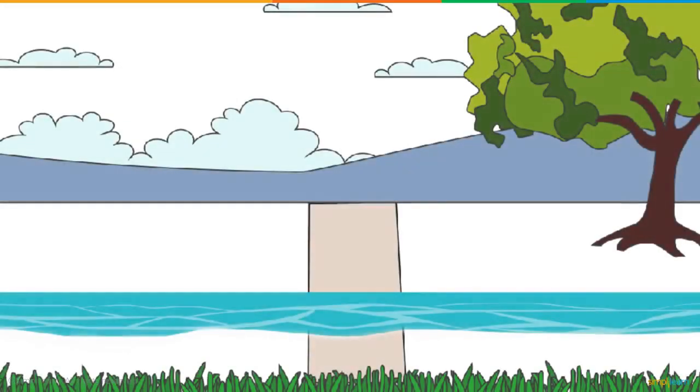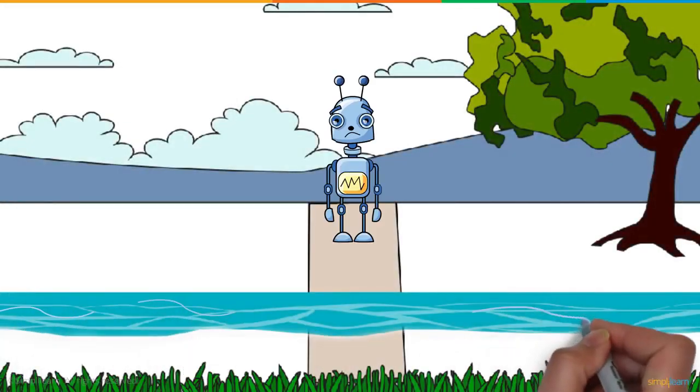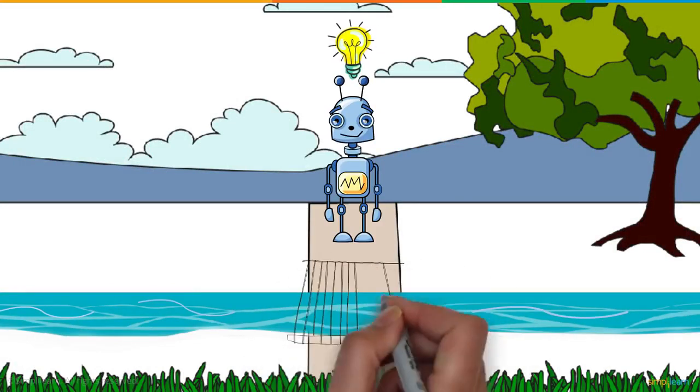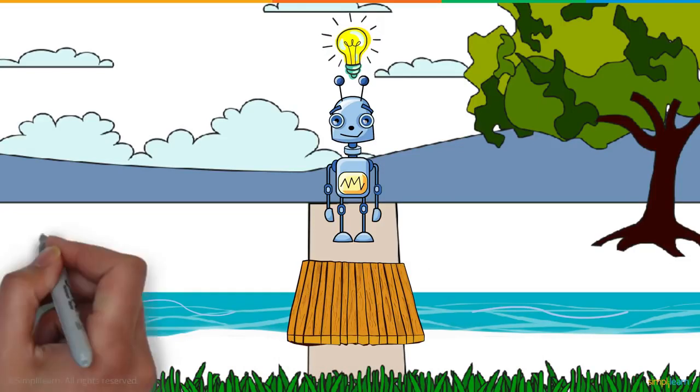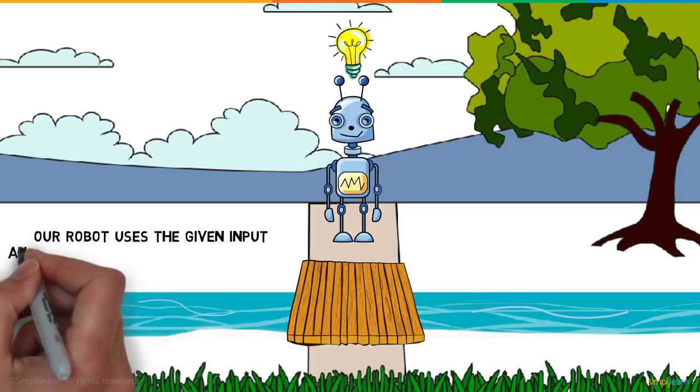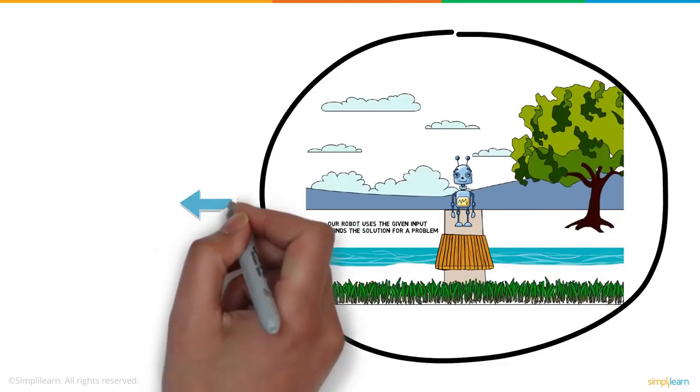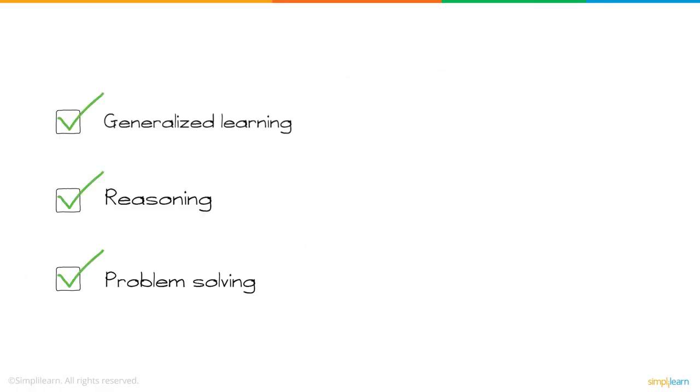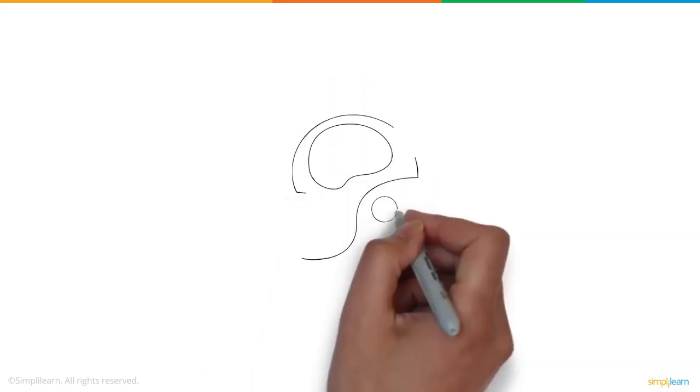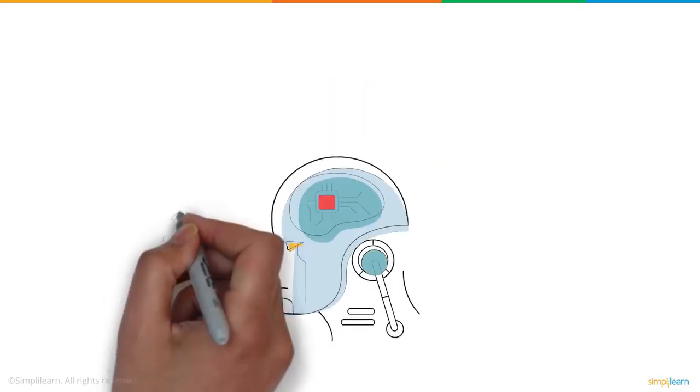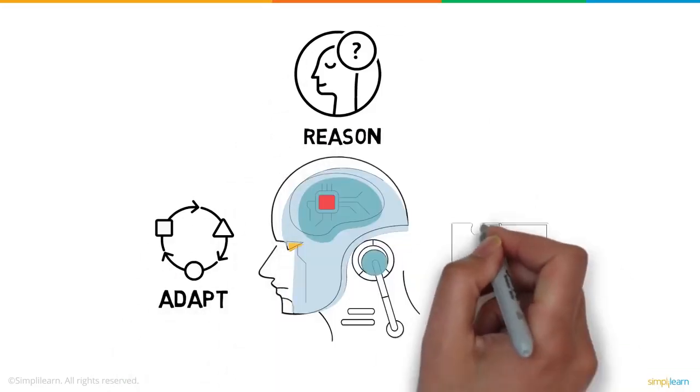After a short stroll, the robot now encounters a stream that it cannot swim across. Using the plank provided as an input, the robot is able to cross this stream. So our robot uses the given input and finds the solution for a problem. This is problem solving. These three capabilities make the robot artificially intelligent. In short, AI provides machines with the capability to adapt, reason, and provide solutions.